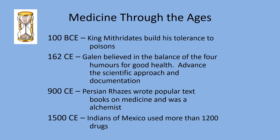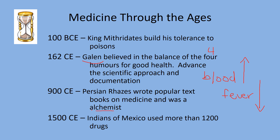Let's continue on with Galen. Galen believed that for health you have to balance four humors — humors are just liquids in the body. For example, one of the humors is blood, and if you had too much blood, that would cause a fever. The way they believed to reduce that fever was to reduce some blood — this practice was called bloodletting.